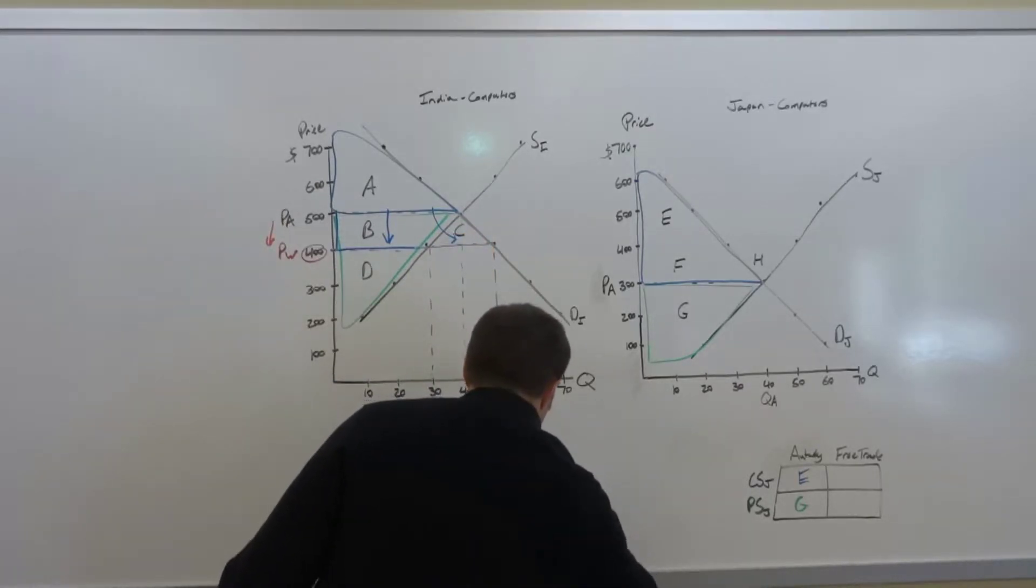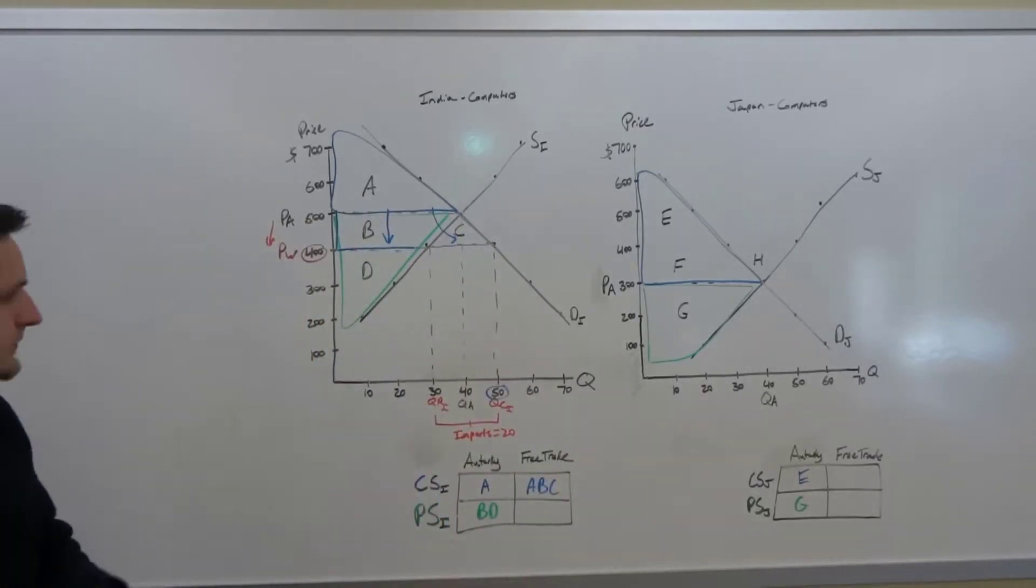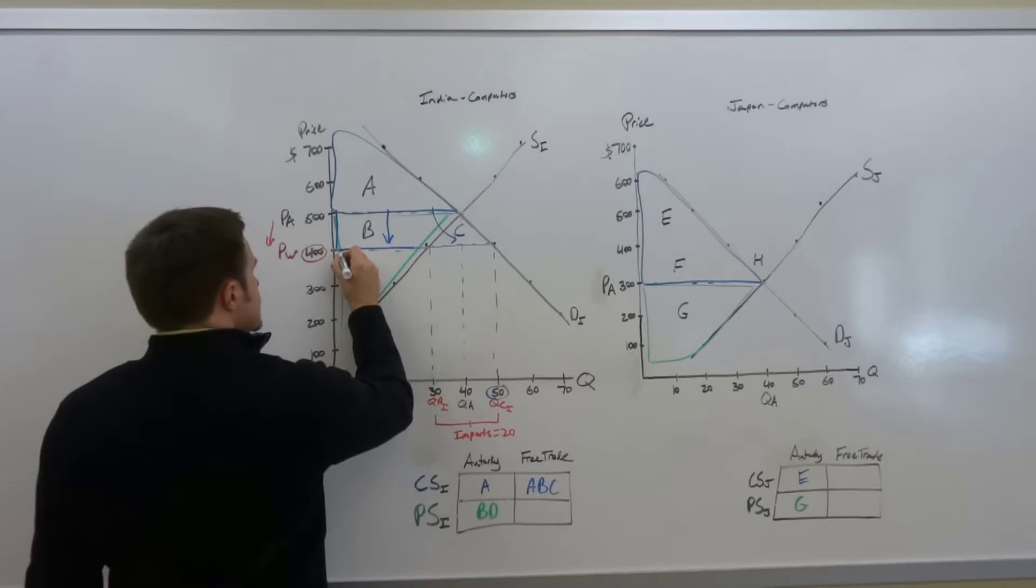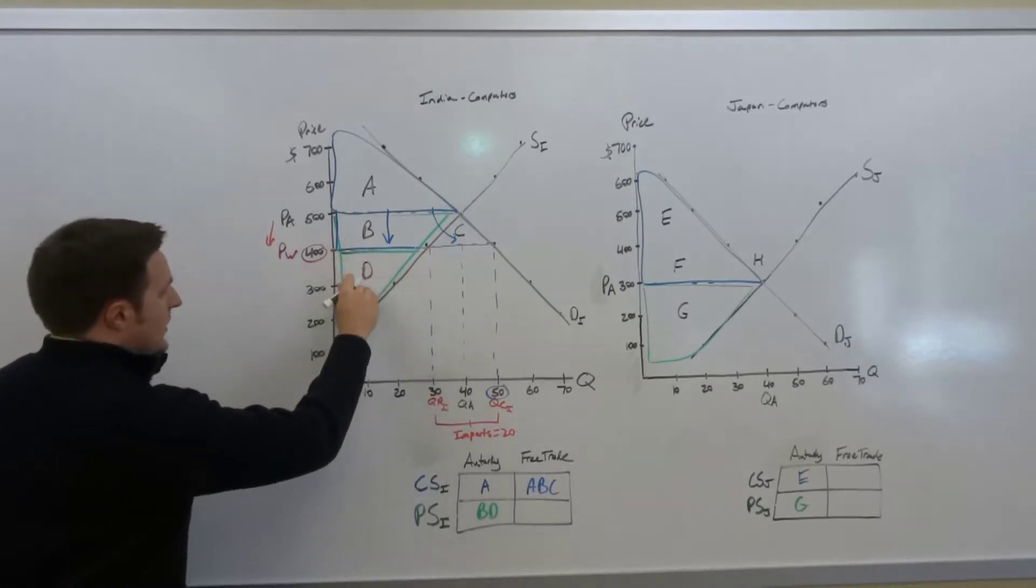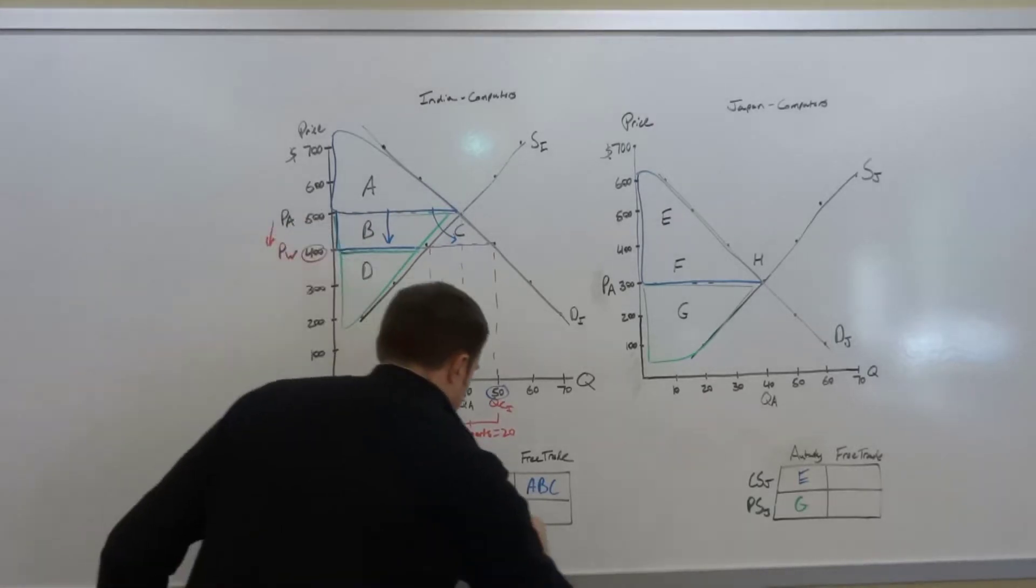However, the producer surplus is now only going to be the area below the price up to the amount that's produced. So that's going to be just area D.